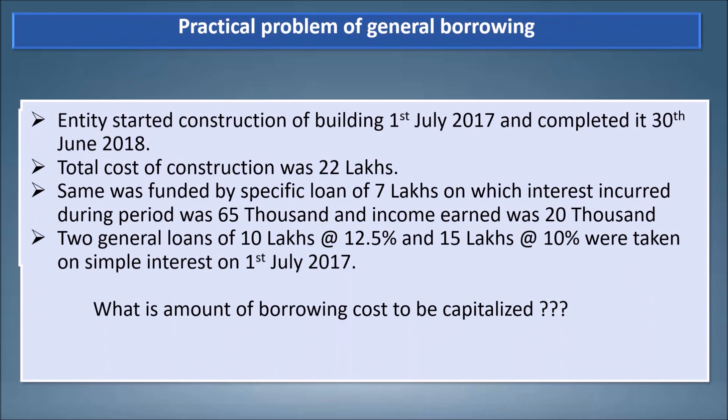Now let's look at a practical problem on general borrowing. An entity started construction of a building on 1st July 2017 and completed it on 30th June 2018. Total cost of construction was 22 lakhs, funded by a specific loan of 7 lakhs on which interest incurred during the period was 65,000 and income on the loan was 20,000. Two general loans of 10 lakhs at 12.5% and 15 lakhs at 10% were taken on simple interest on 1st July 2017. What is the amount of borrowing cost to be capitalized?